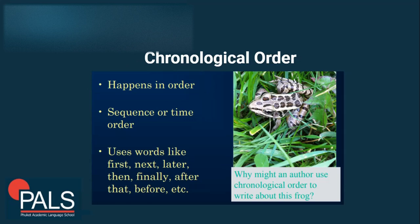Today we will talk about chronological order. A bit of trivia: 'chronological' came from the word 'chronos,' the name of the father of Zeus — the god of time. That itself gives us a clue that this organizational structure focuses on texts that talk about time. When we use chronological order, events happen in a specific order, and it uses transition words like first, next, later, then, finally, after that, and before.